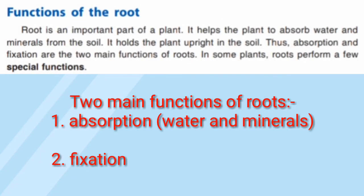Now let's discuss the functions of the root. There are two main functions of the root: absorption and fixation. Absorption means the root absorbs water and minerals from the soil. Fixation means it holds the plant upright in the soil — because the roots are fixed in the soil, the plant stands straight. Thus, absorption and fixation are the two main functions of the root.